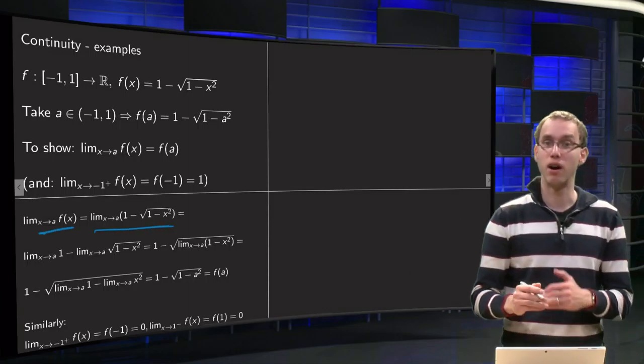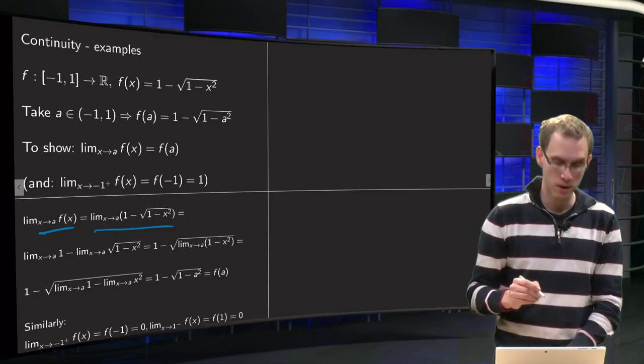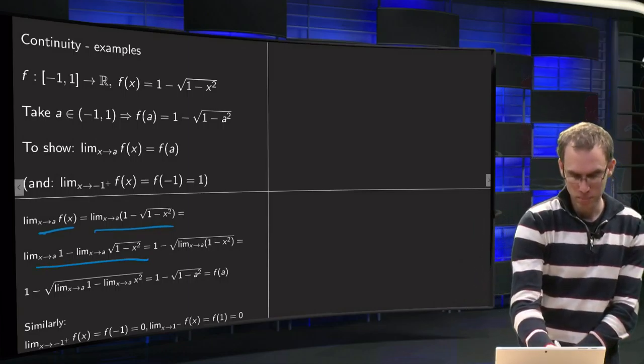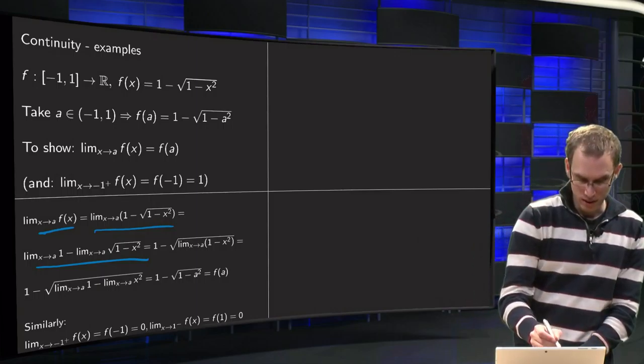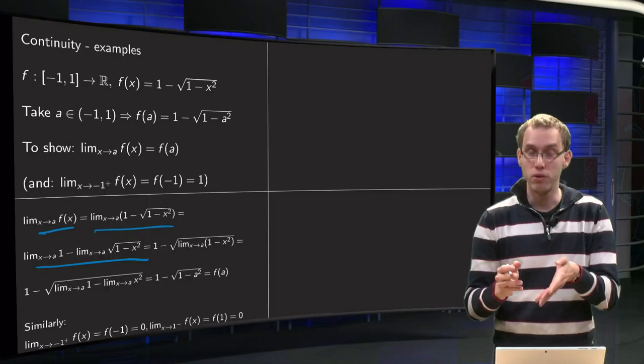So let us try. Fortunately, we can use all our limit rules. So first step: limit x to a of f of x equals limit x to a of our function, 1 minus this square root.